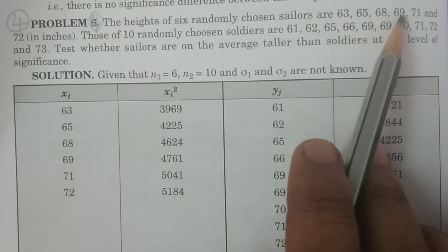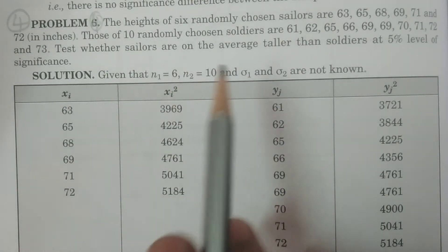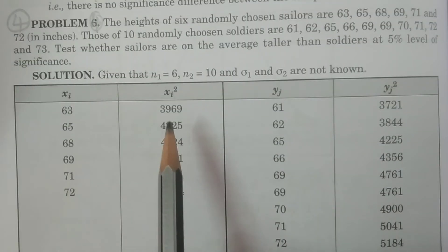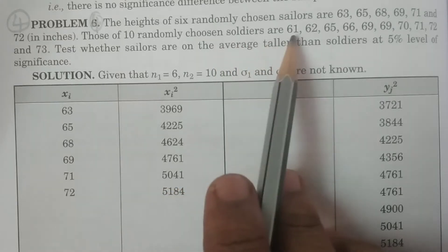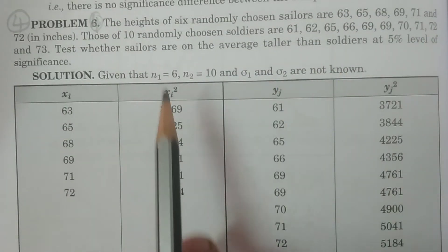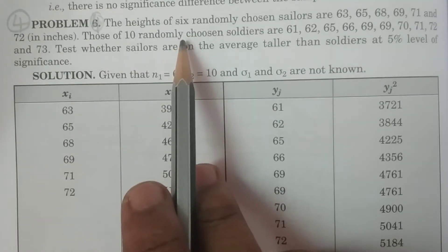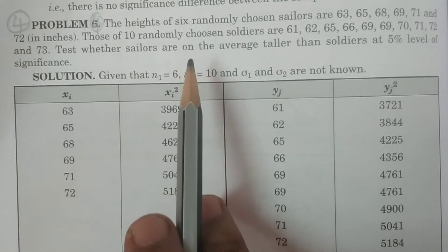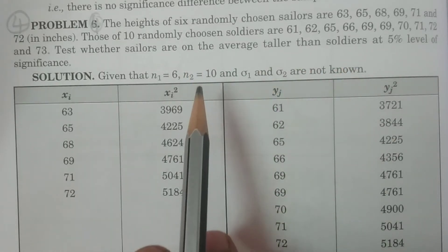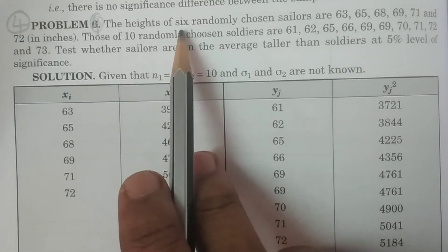The heights of six randomly chosen sailors are 63, 65, 68, 69, 71, and 72 inches. So the data is given — the heights of six randomly chosen sailors. The first sample n1 is equal to 6. Since the sample size is 6, it is a small sample.